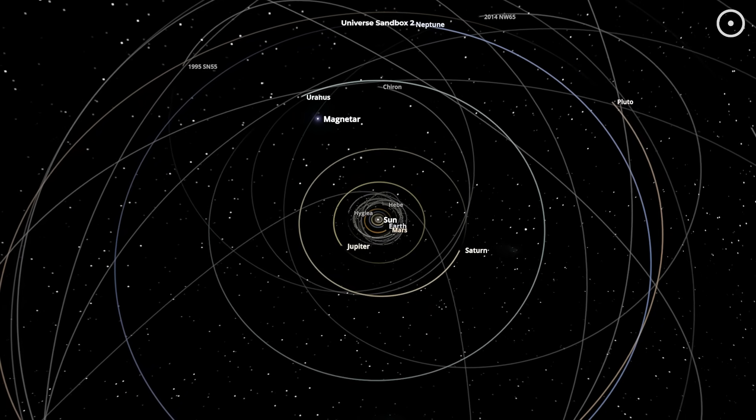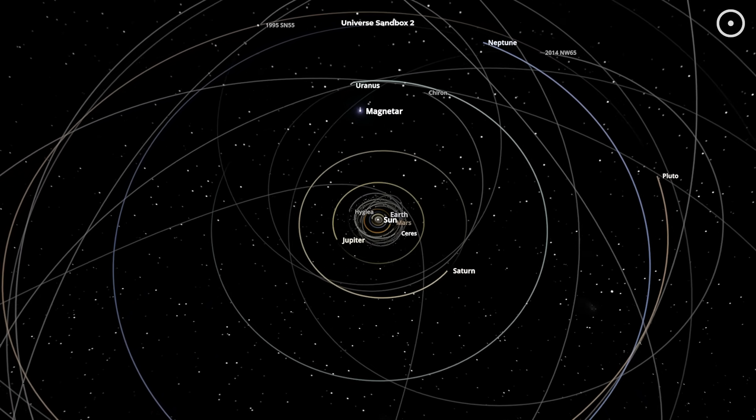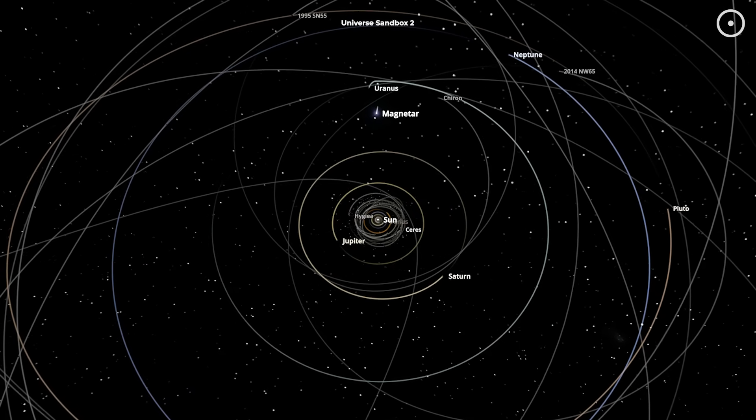Now let's imagine the worst-case scenario. A rogue magnetar is heading straight for our solar system. Here's how the end of the world would unfold, step by terrifying step.